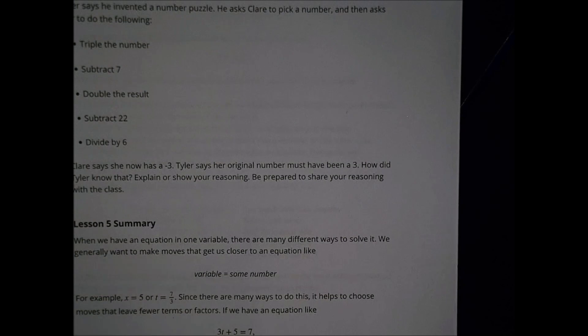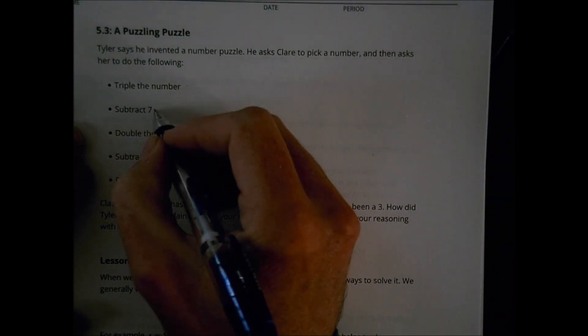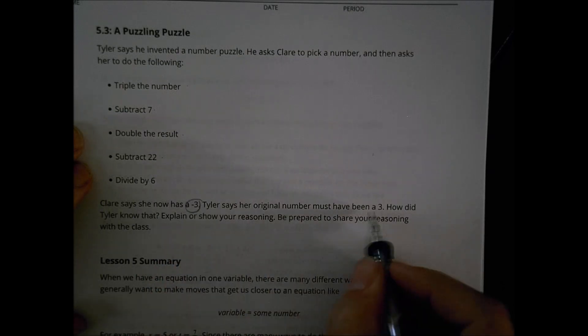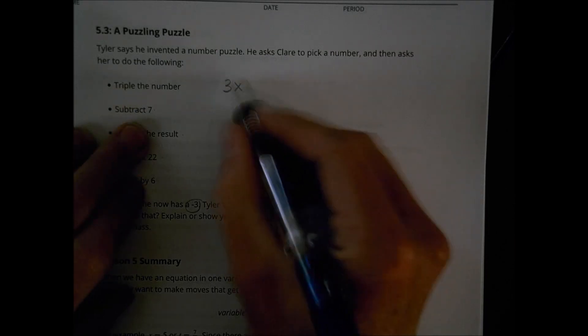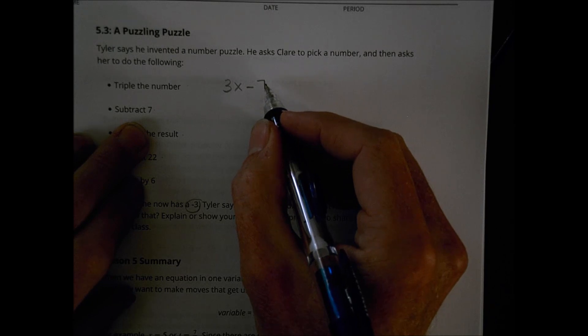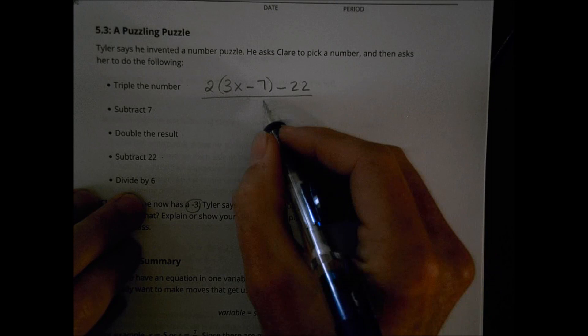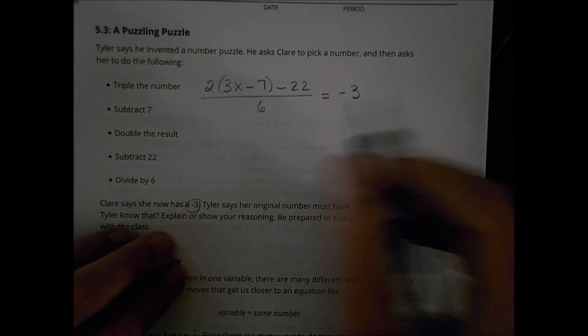Activity 3 says Tyler invented a number puzzle. He asked Claire to pick a number, then triple it, subtract 7, double the result, subtract 22, and divide by 6. Claire got negative 3, and Tyler said her original number must have been 3. To see why, we write the expression: take x, multiply by 3 to get 3x, subtract 7, then double that result giving 2(3x minus 7), then subtract 22, and divide by 6. Set that equal to negative 3.